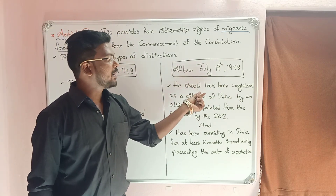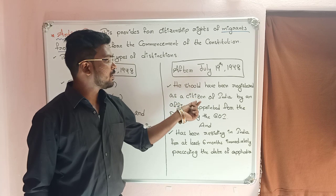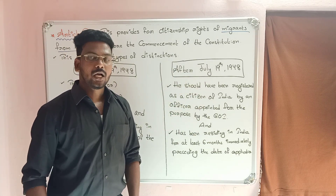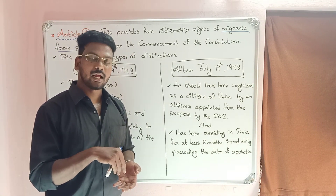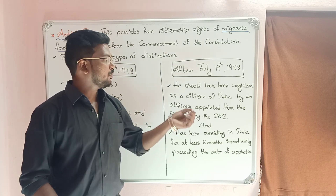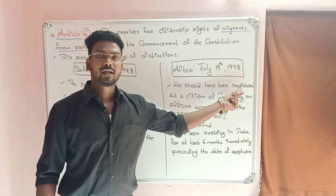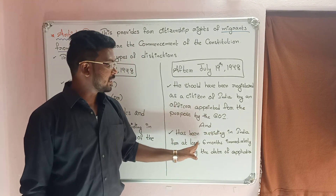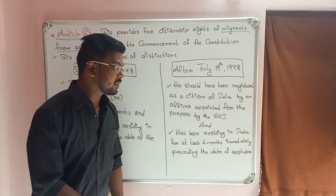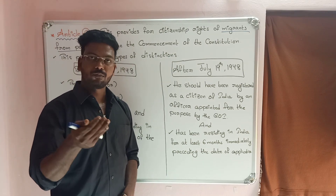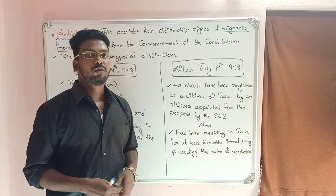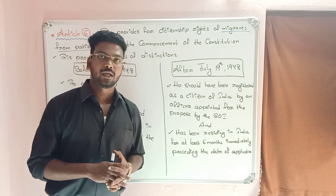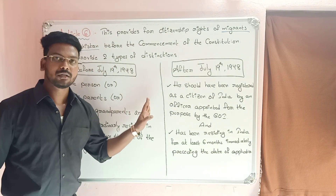After July 1948: the person should have been registered as a citizen of India by an officer appointed for the purpose by the Government of India. Additionally, he must have been residing in India for at least six months immediately preceding the date of application for registration as a citizen of India.